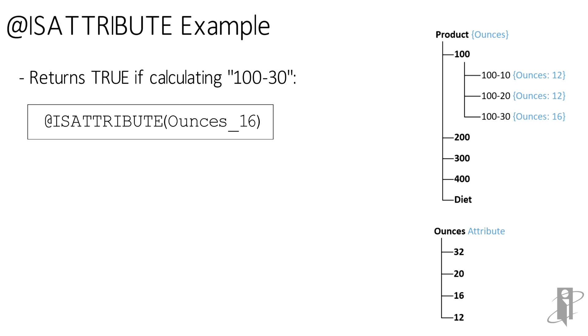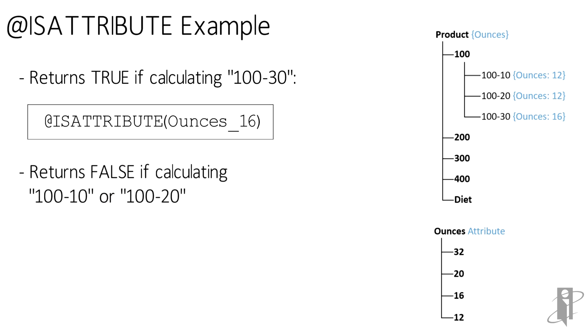If I made it say Ounces_12, it would return true for 100-10 and 100-20, but it would return false for 100-30.